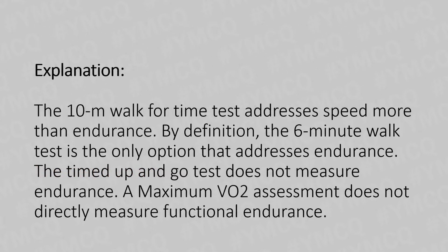The explanation: the 10-meter walk for time test addresses speed more than endurance. By definition, the 6-minute walk test is the only option that addresses endurance. The Timed Up and Go does not measure endurance, and a maximum VO2 assessment does not directly measure functional endurance.